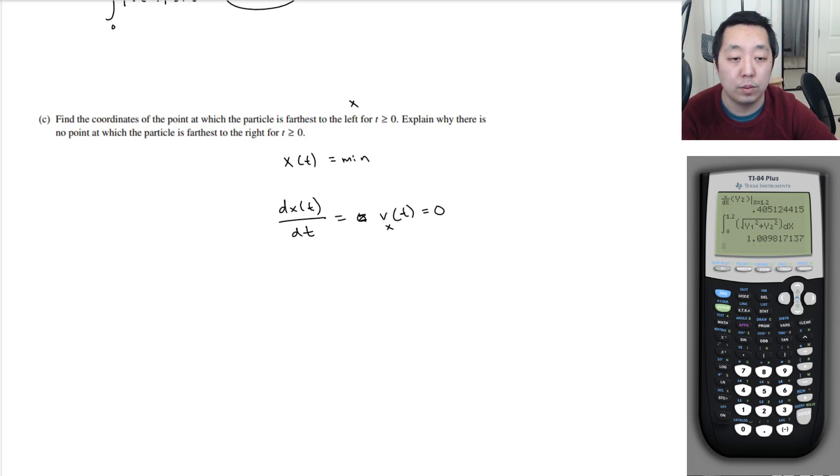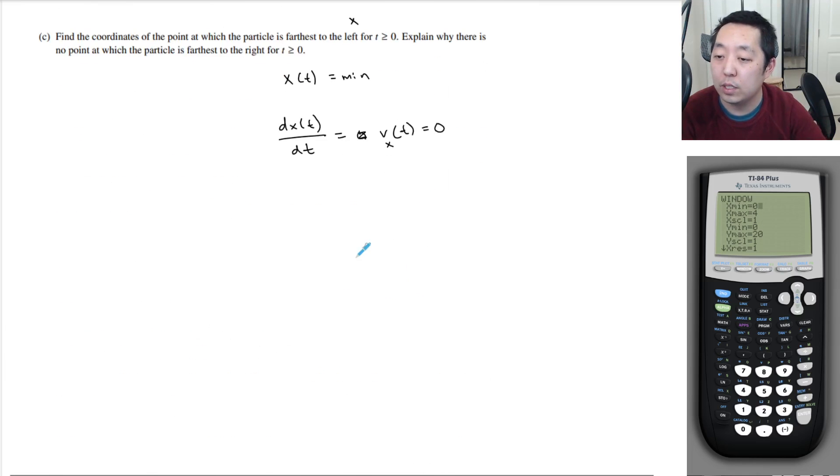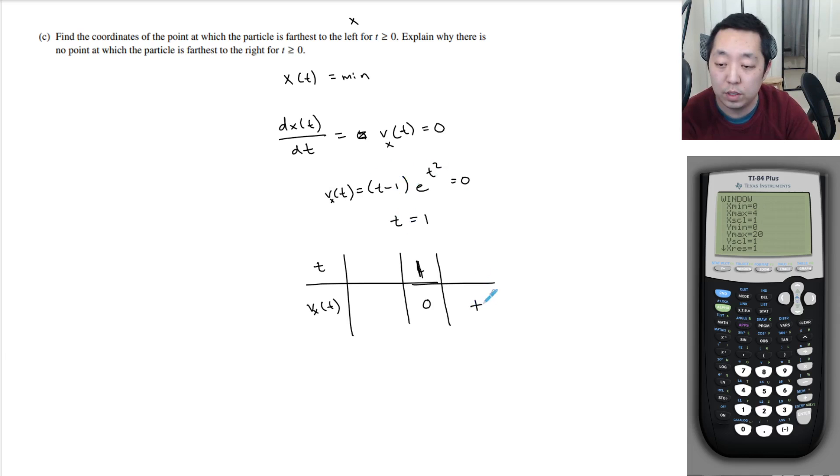So we want to look at this. So this is the velocity in the x-component. So we want to set this derivative equal to 0. So it's t minus 1 e to the t squared is equal to 0. So that's the velocity, vx of t. The exponential can never be 0. So this only occurs at t equals 1. And is this a minimum or maximum? Well, if you consider vx of t, we do a sign test at t equals 1, we know the velocity is 0. But how about when it's greater than 1? This is positive. Exponential is always positive. So this is positive. And for t less than 1 but greater than 0, this is negative and this exponential negative. So this is a relative minimum.